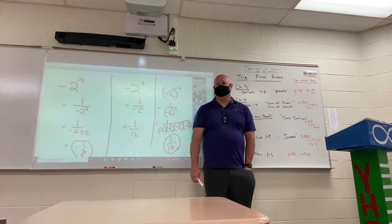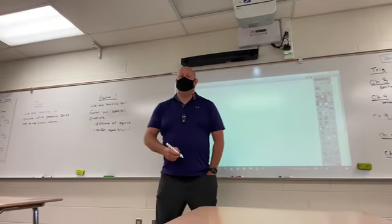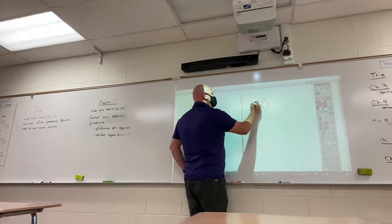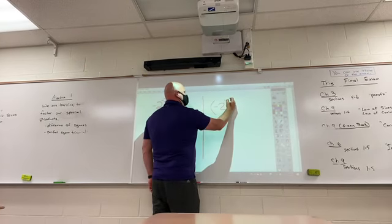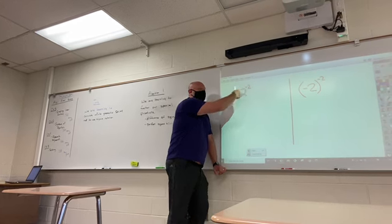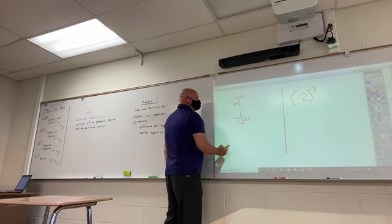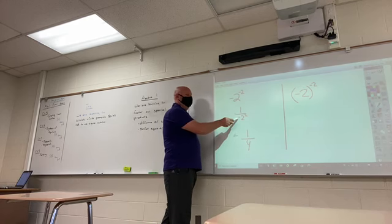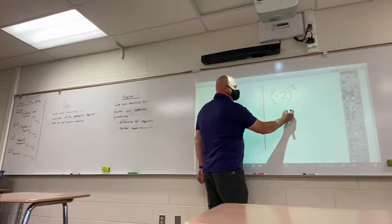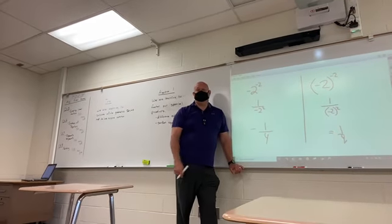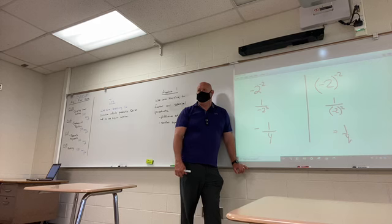These are easy multiple choice questions. I can give you two questions right back to back — one could just say negative 2 to the negative 2, and the next question, negative 2 in parentheses to the negative 2. With the negative exponent you flip it. Is this going to be positive or negative 1 fourth? The one without parentheses is negative, because that negative is not part of the square. The one with parentheses would be positive 1 fourth. You've got a 50-50 chance on those.